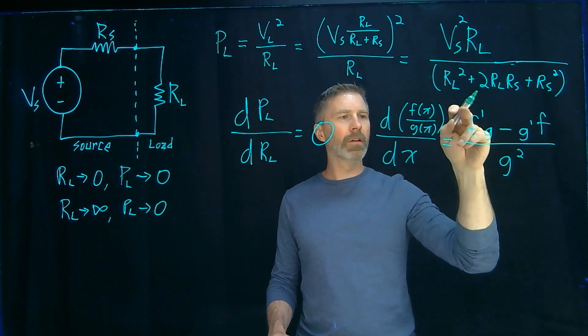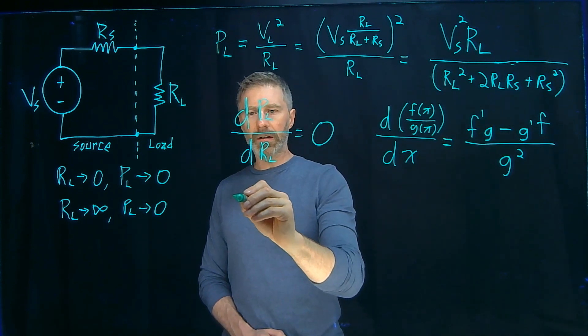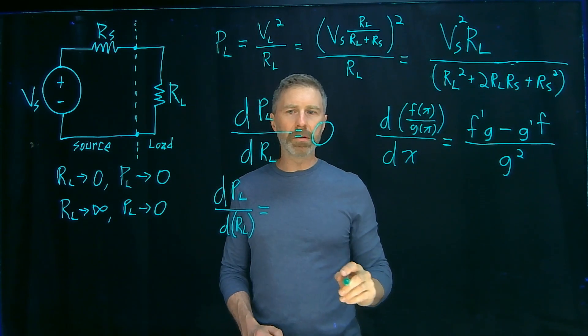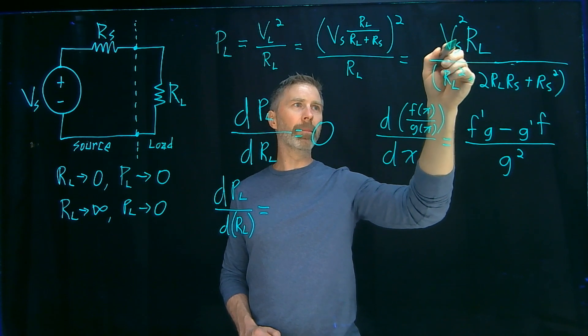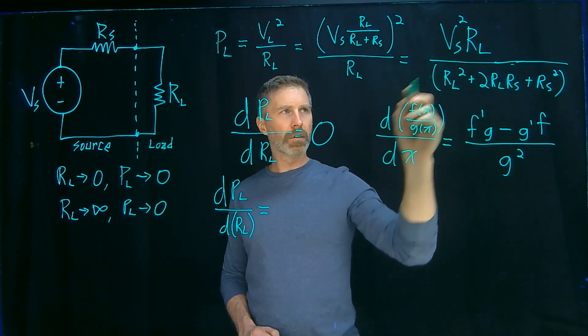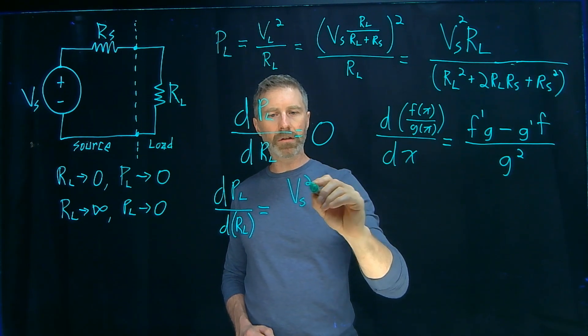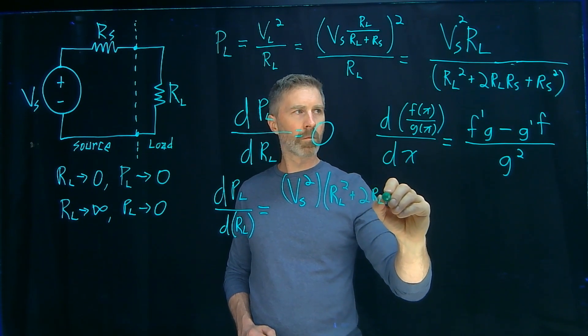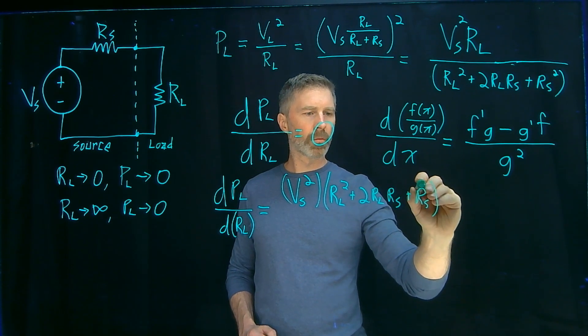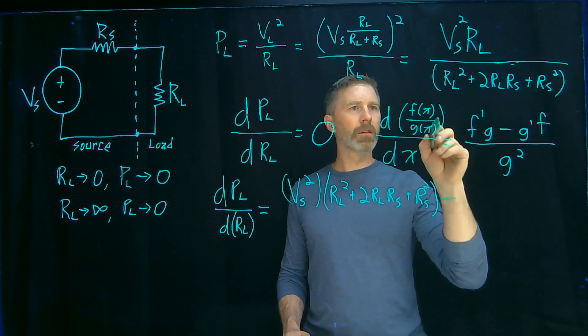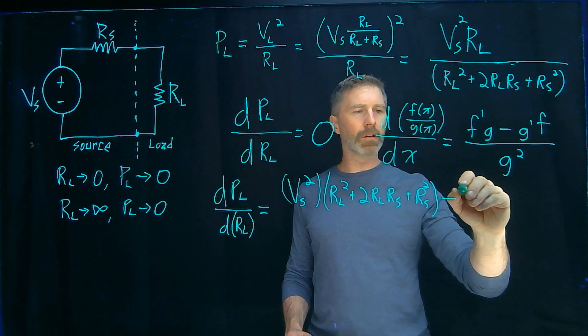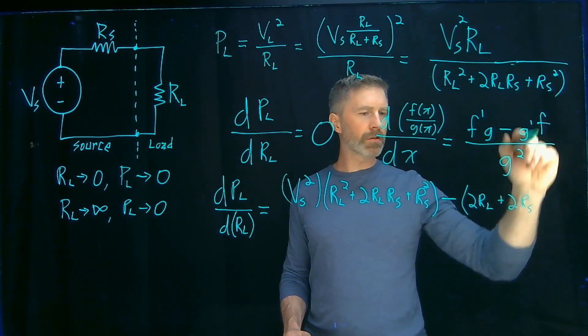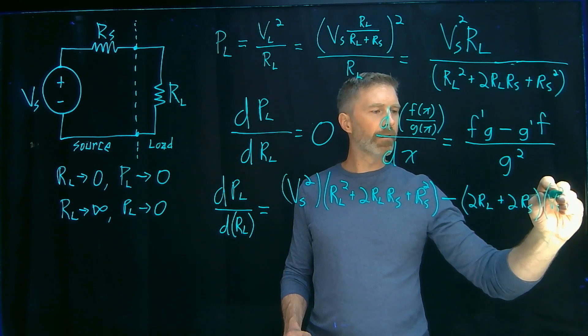So in this case, my F is the numerator and the G is the denominator. And so my derivative of the power with respect to resistance will be F prime G. So the derivative of this, so F prime, will give me, well, remember that Vs is a constant. I'm doing the derivative with respect to RL, so I'll just have that constant times G minus G prime. So derivative of this with respect to RL will give me 2RL plus 2RS. And that's just a constant, so that won't be included. And then this all gets multiplied by the numerator, Vs squared RL.